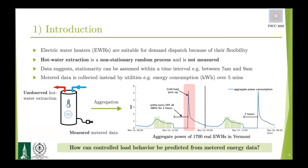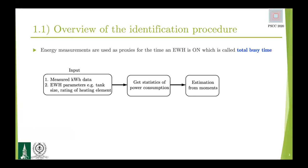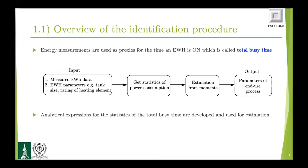Based on the limitation of the data available, we are really interested in the models of the end-use consumption that are identifiable from the AMI data. We take as input the AMI data and calculate what's called the total busy time, which represents the total time an electric water heater was on within a time period. The AMI data is collected in the form of kilowatt-hours within 15 minutes, for example, and total busy time represents what portion of that 15-minute interval the electric water heater was on. Along with some fleet information — like the rating of the heating element or thermal time constants — we compute statistics of this total busy time and feed them to our estimation algorithm to get as output the parameters of the end-use process. In this work, we develop first the analytical expressions of the statistics of total busy time, and then use them for estimation.